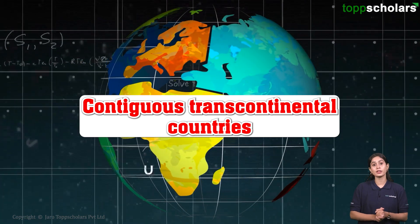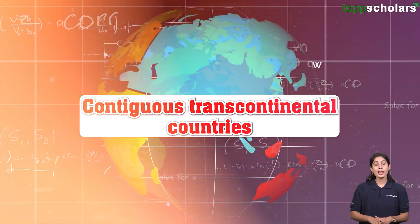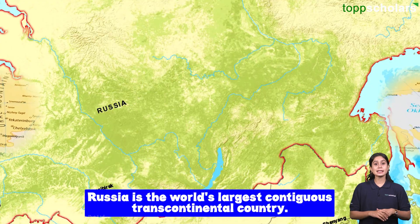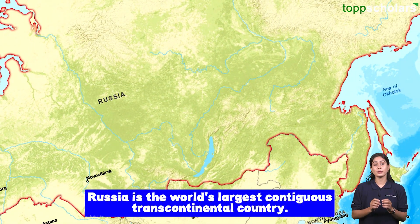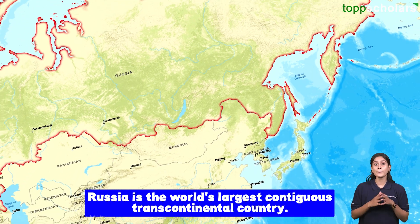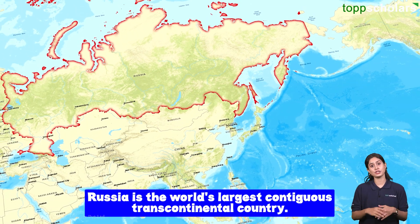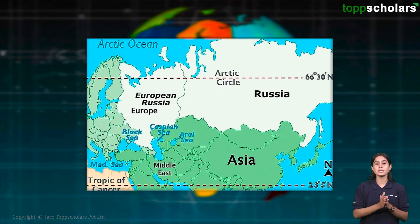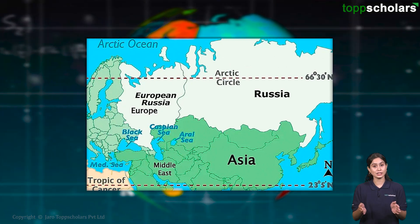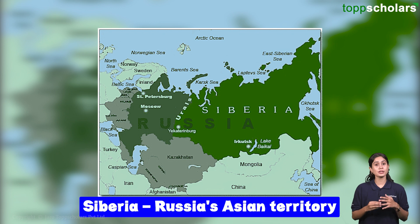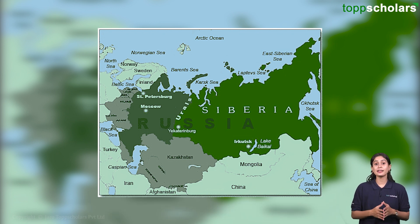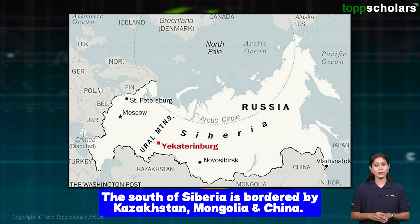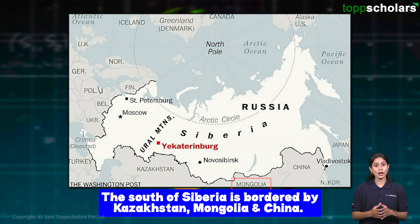Let us first look at some contiguous transcontinental countries. The first one is Russia. It is the world's largest contiguous transcontinental country, encompassing both Europe and Asia. Its European territory is west of the Ural Mountains, which is the continental border between Europe and Asia. Siberia, the Russian-Asian territory, is east of the Urals and is bordered by the Barents Sea, Kara Sea, and East Siberian Sea. The south of Siberia is bordered by Kazakhstan, Mongolia, and China.